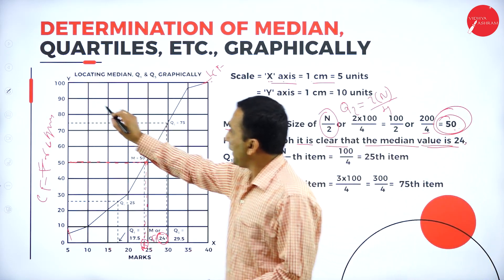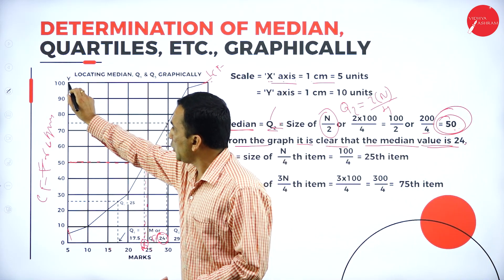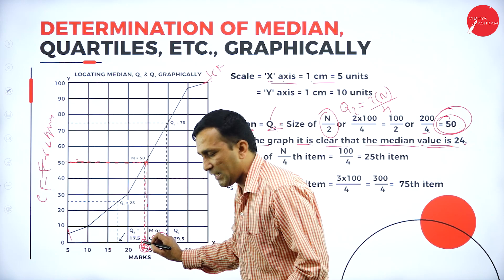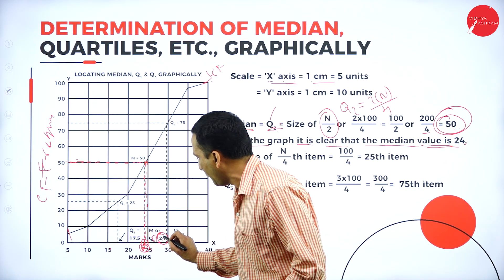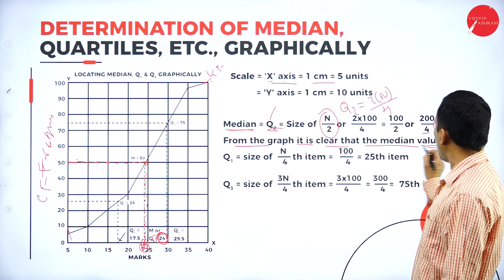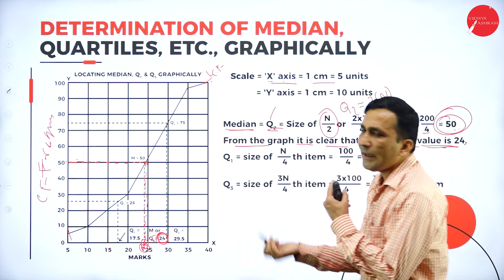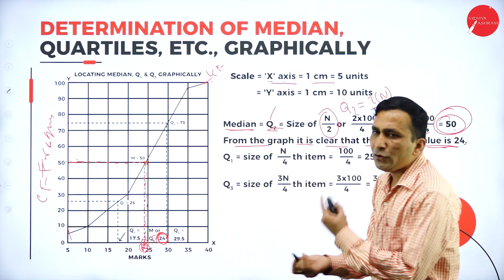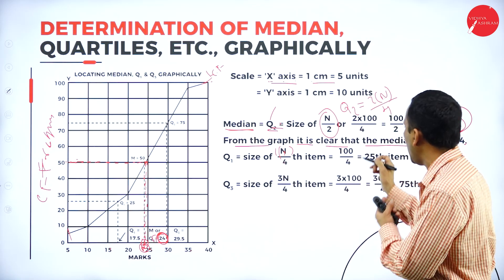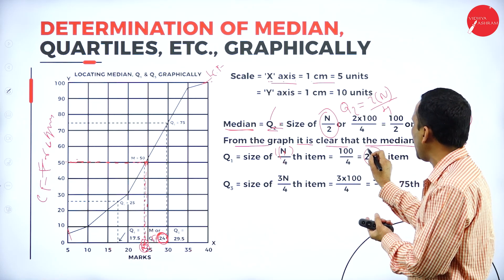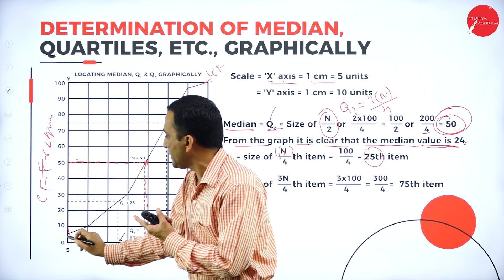Now the second step: for median, we apply the simple formula n by 2. The n value is 100; 100 divided by 2 gives us 50. After getting this value from the cumulative frequency, I need to assume more than 50. More than 50 means this class — after 30 comes 55 — so I need to assume more than 50. After simplifying, this is called the median class. In this question, whatever is given, we can write in this format or directly also we can do.